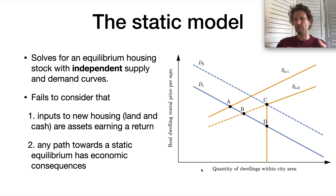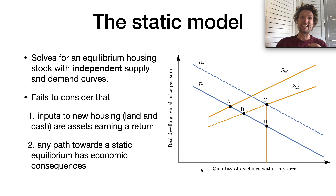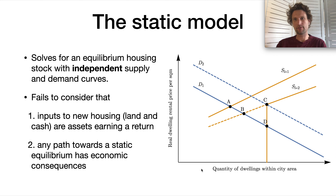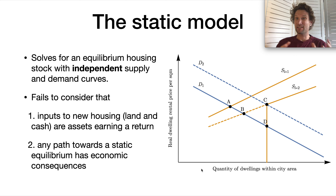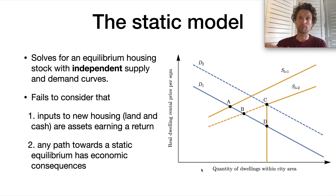First, new housing supply is not the same as, for example, the supply of fruit and vegetables, newly built cars, or electronic gadgets. Land is an asset and a house is an asset. Prior to developing, you own a site that earns a rate of return, and when you develop and sell it, you give up that rate of return. A more complete model has to consider that housing production is not a market-clearing function like a harvest of wheat or bananas. It's a balance sheet allocation problem — how quickly do I develop to optimize the rate of growth in my balance sheet, which currently holds land and upon selling will hold cash.